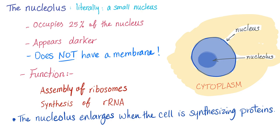How about the nucleolus? Nucleolus literally means a small nucleus. It occupies around a quarter of the nucleus. It appears darker under the microscope. But it doesn't have a membrane around it. There is no such thing as a nucleolar membrane. It doesn't exist. The function of the nucleolus, assembly of ribosomes and synthesis of RNA. The nucleolus enlarge when the cell is synthesizing proteins. It's active now. It's the same thing as your skin getting darker while having sex. Same idea. You're more active then.